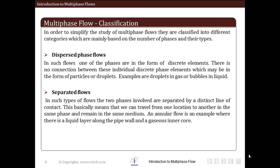Next is separated flows. In such type of flow, two phases involved are separated by a distinct line of contact, which means that we can travel from one location to another in the same phase and remain in the same medium. An annular flow is an example of such type of flow. Annular flow will generally involve a liquid layer along the pipe and a gaseous inner core.